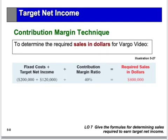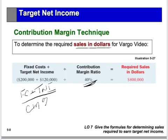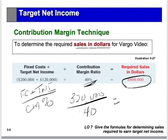To determine the required activity in sales dollars, we use the contribution margin ratio. We take fixed cost plus target net income and divide by the contribution margin percentage. In this case, $320,000 divided by 0.40 means we need to do $800,000 in sales to cover fixed costs and earn a profit of $120,000.